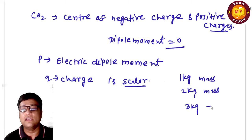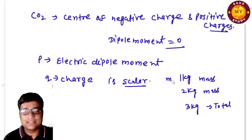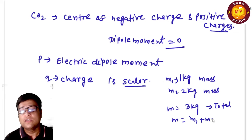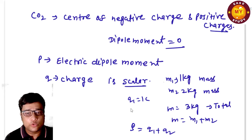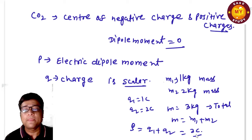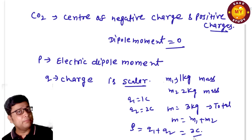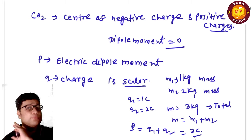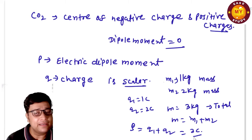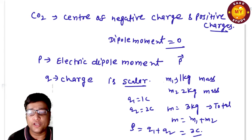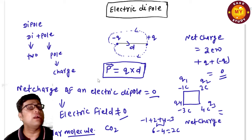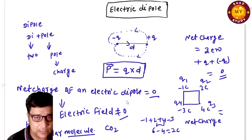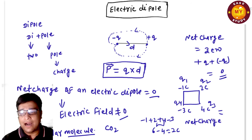Just as mass adds up — 1 kg + 2 kg = 3 kg — charge also adds: q = q1 + q2. If q1 = 1 C and q2 = 2 C, total charge is 3 coulombs. The only difference between charge and mass is that charge can be positive or negative, while mass is always positive. The dipole moment p = q × d has a direction, making it a vector quantity.